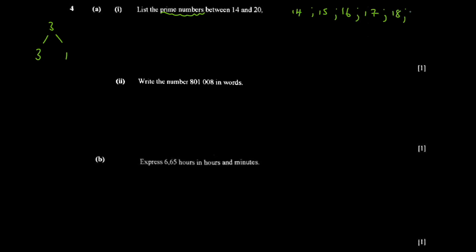The numbers to check are 14, 15, 16, 17, 18, 19, and 20. 14 is not prime — its factors include 2, 7, and 14. 15 is not prime — it has factors 1, 3, 5, and 15, which is four factors. For 16, the factors are 1, 2, 4, 8, and 16 — once you reach half the number, you skip to the number itself — giving five factors, so not prime.